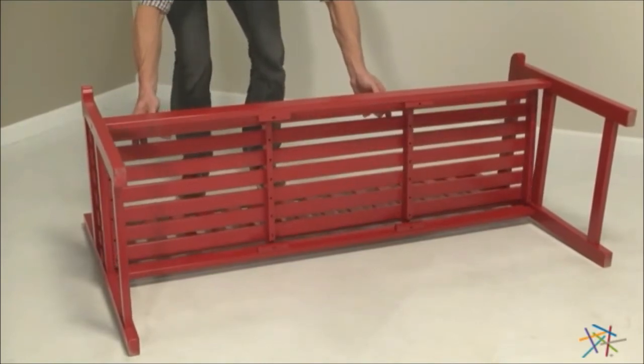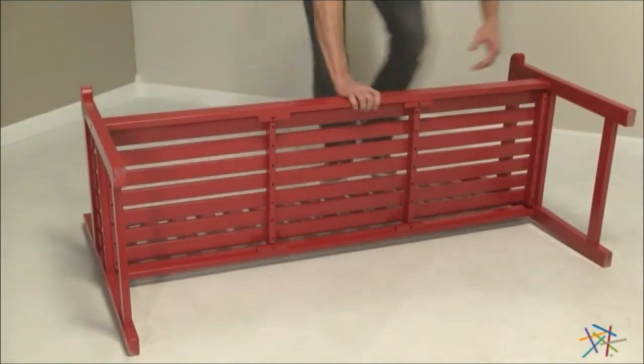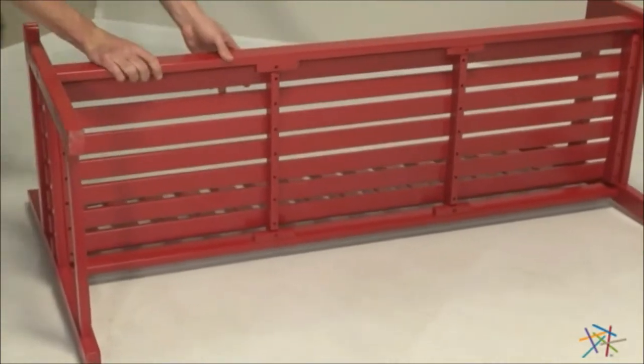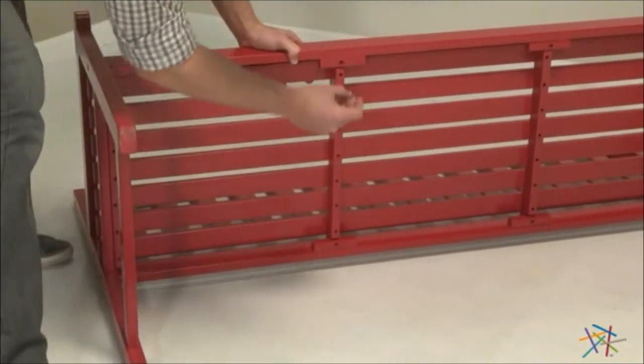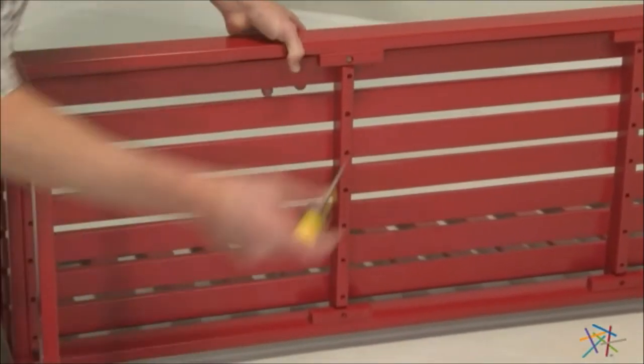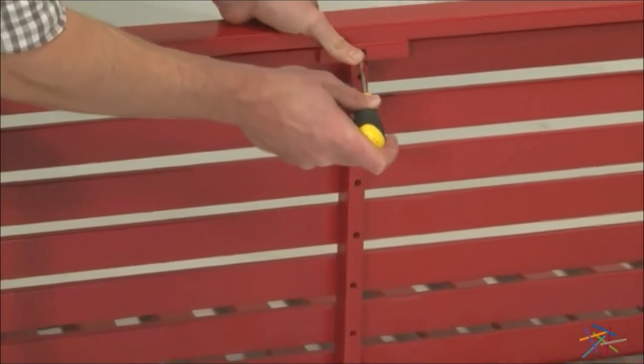Line the slat support bars with the pre-existing holes. Insert the screw and use your Phillips head screwdriver (not included) to finish all four screws.